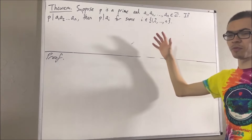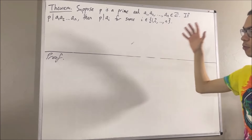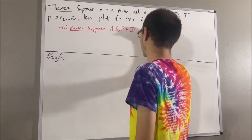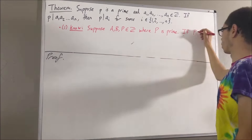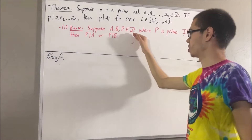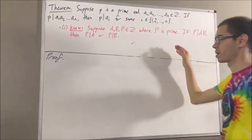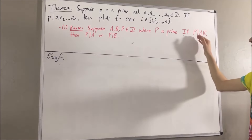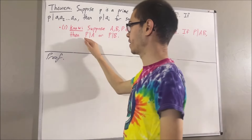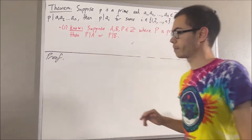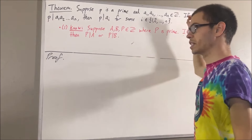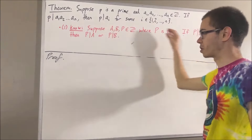Now, in proving this theorem, we are going to use the following preliminary result. Suppose a, b, and p are integers where p is prime. If p is a divisor of a times b, then p is a divisor of a, or p is a divisor of b. So, this theorem is essentially generalizing this result.